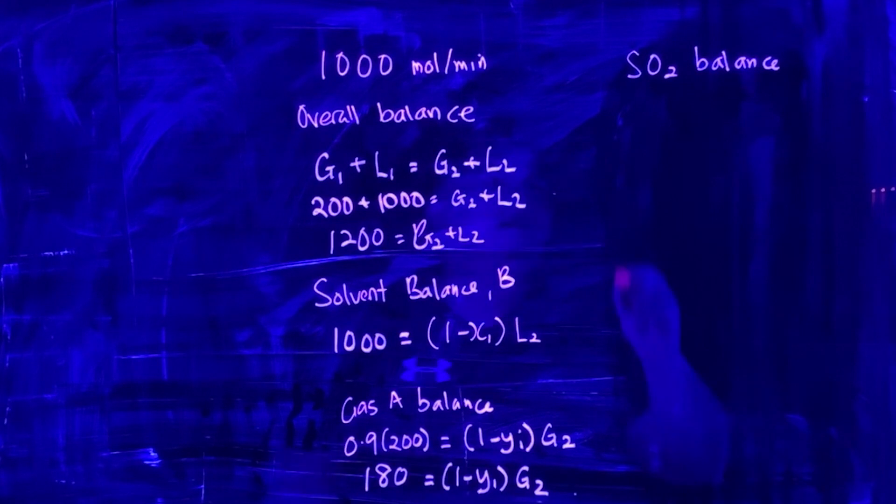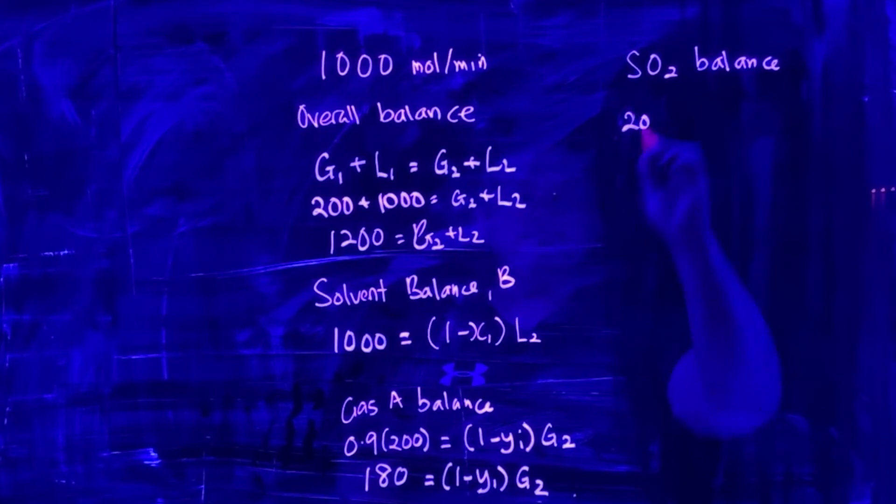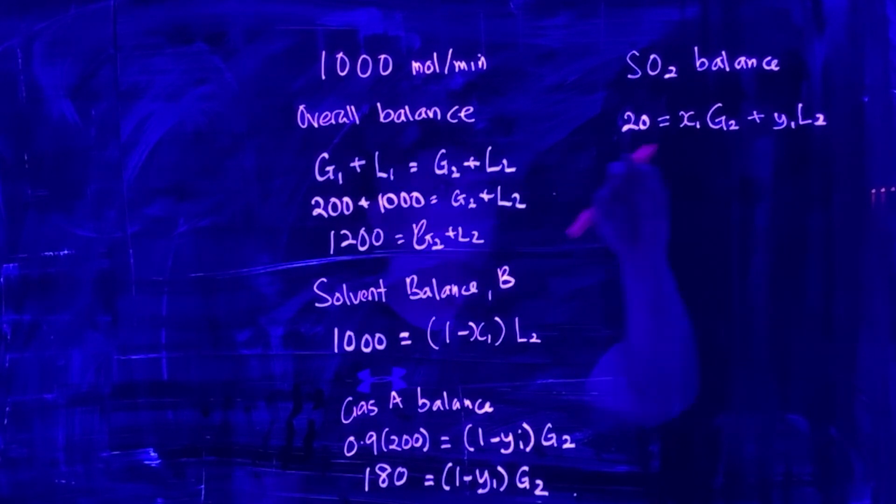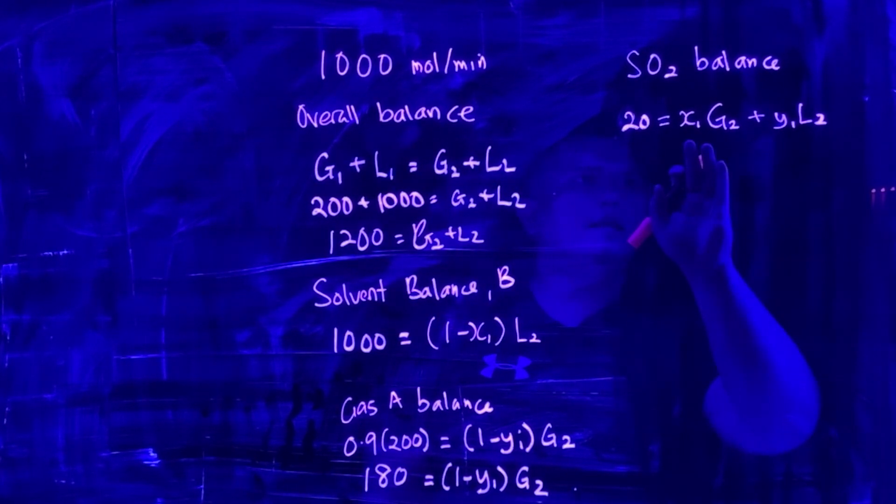SO2 balance is actually 20, which is the leftover (0.1 × 200), equals x1·G2 + y1·L2. This is what's coming in, and this is where it goes out—one goes to the gas, another goes to the liquid solvent.